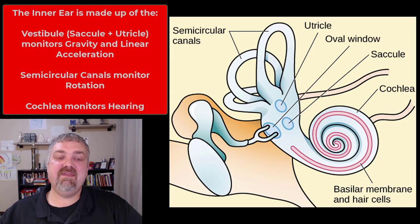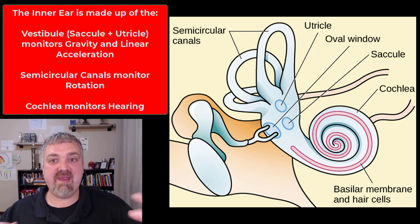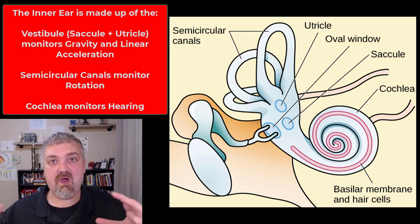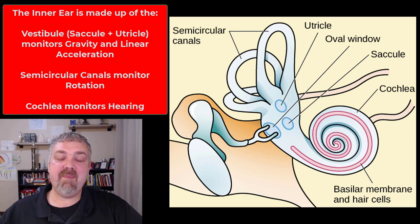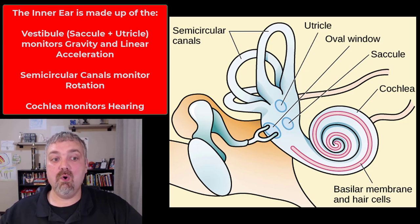All right, then we have the actual inner ear. Inside the inner ear, we have what's called the membranous labyrinth, which is the chambers and tubes of this inner ear. The bony labyrinth is all the hard, bony tissue that surrounds and protects them. The three parts of the inner ear are going to be the vestibule, the semicircular canals, and the cochlea.